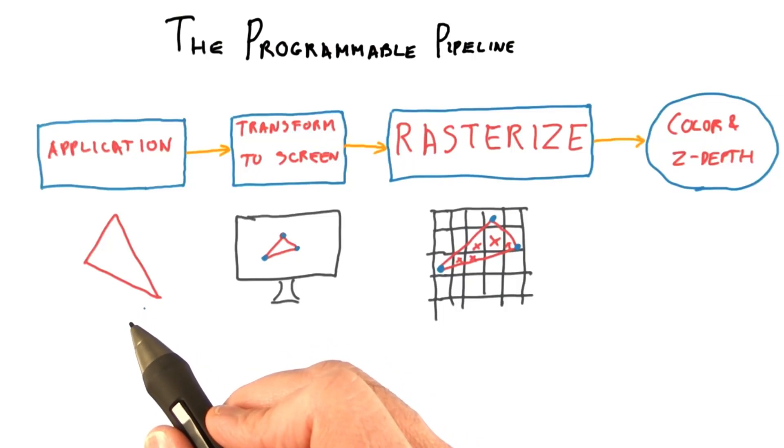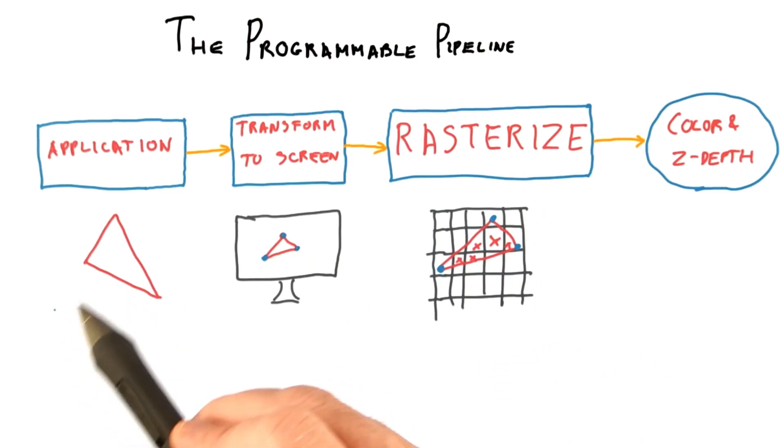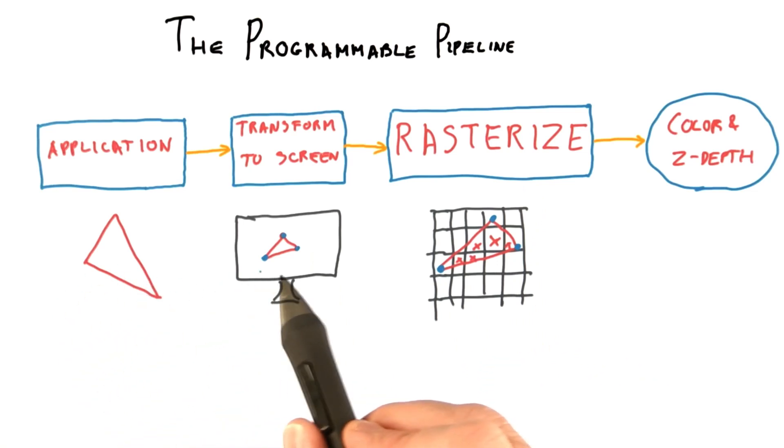To get back to the rendering pipeline, our simplified view is this. The application sends a triangle to the GPU. The GPU determines where the triangle's vertices are on the screen, including the z-depth.